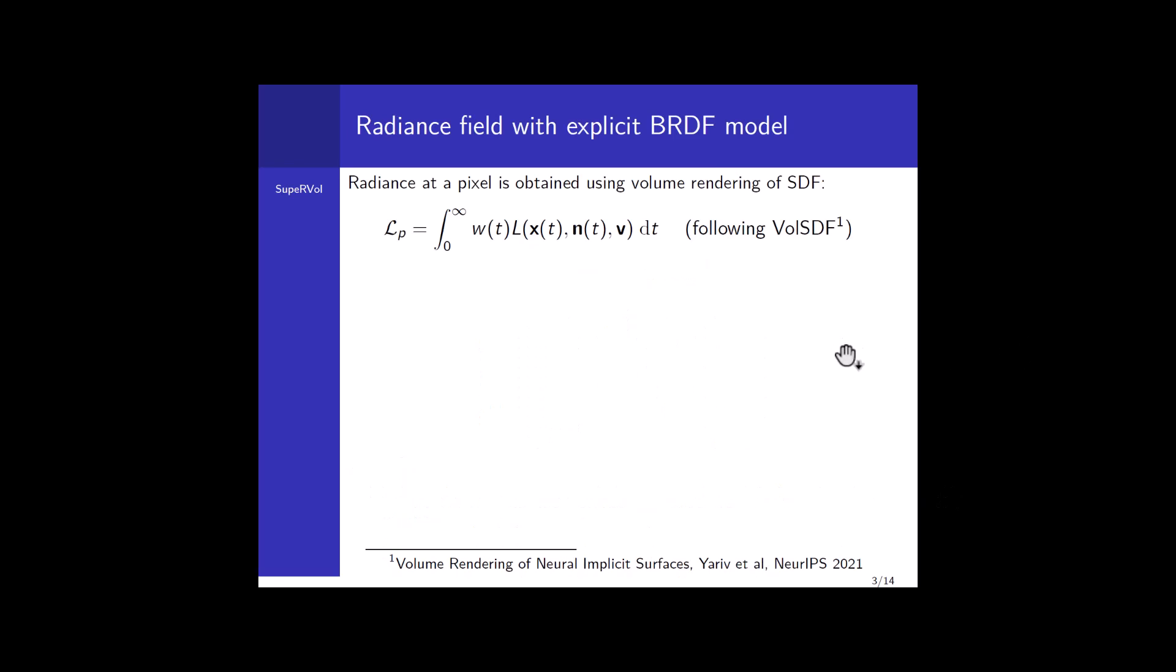First, the radiance at a pixel is obtained using volume rendering of signed distance fields. It's given by the following equation where the weights are expressed with respect to the density of the object and L here is the radiance field. This is exactly the same equation as used in NeRF with the fundamental difference that the density is not the output of a neural network but is rather expressed with respect to the signed distance field values. This key difference allows for dramatic improvement of the geometry, which motivates our choice to build upon the framework VolSDF.